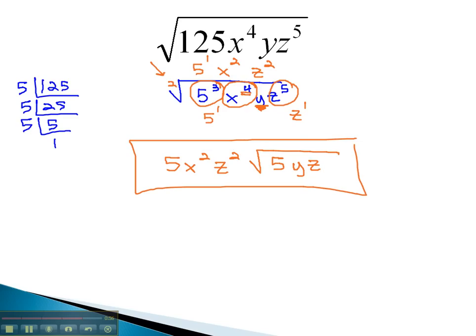With numbers or with variables, we find the prime factorizations and then divide each exponent by the index to decide how many come out front of the radical. Any remainders, or things we can't divide by the index, remain inside the radical.